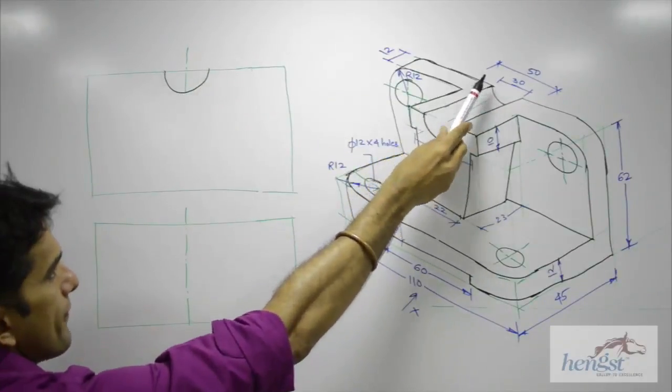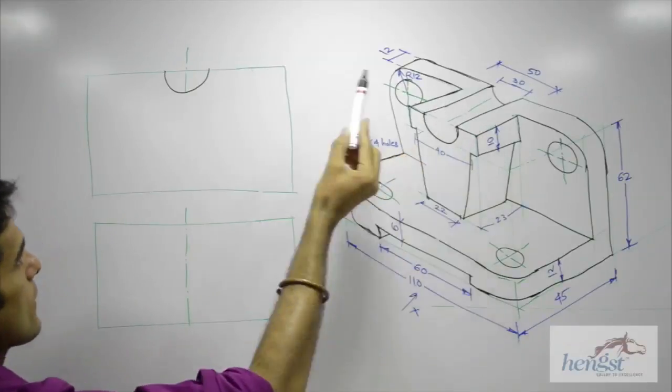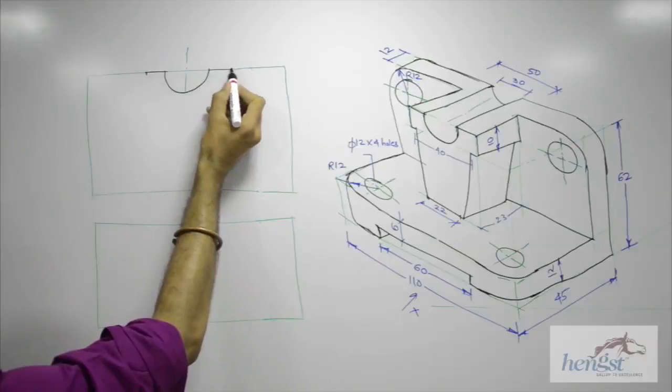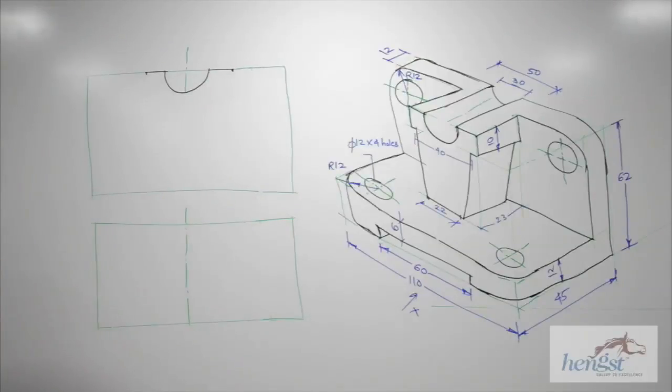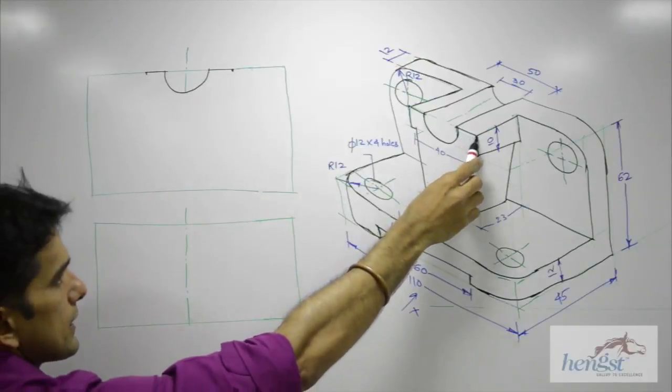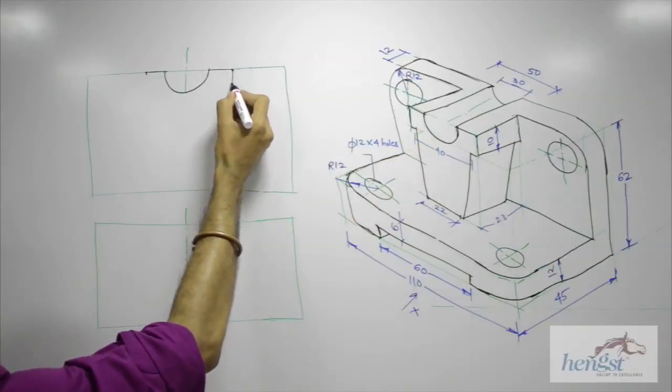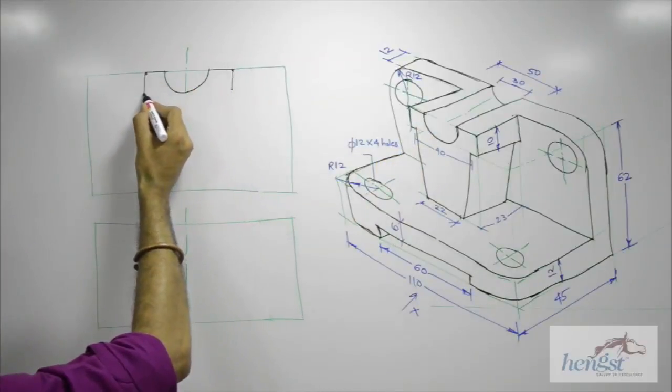Then they have given 50. This to this is 50, so I can take 10 on both sides. Then if you see, it is going down 10 on both the sides. So you go down by 10.